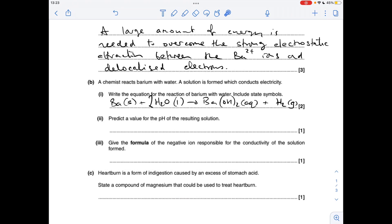Part B, so when group 2 elements react with water we get the group 2 hydroxide in aqueous solution and hydrogen gas. So the equation for barium and water looks like that.